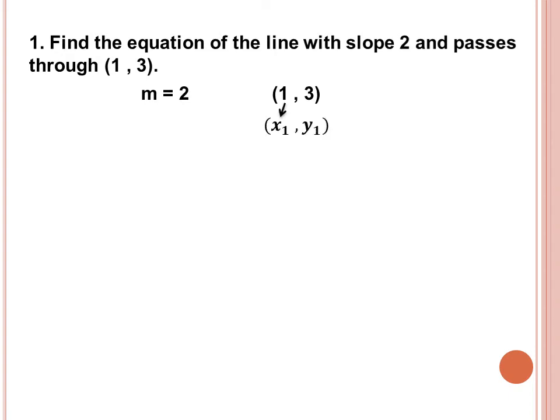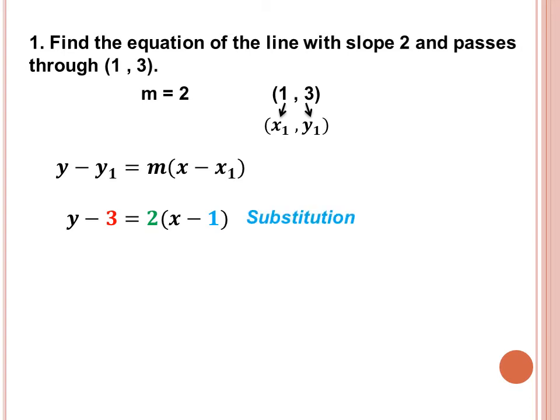We will assign the value of x-sub-1 and y-sub-1 since we only have one point. Next, write the formula to get the equation of a line given the slope and a point: y minus y-sub-1 is equal to m times the quantity x minus x-sub-1. Then we substitute the given values — y minus 3 is equal to 2 times the quantity x minus 1. This is by substitution.